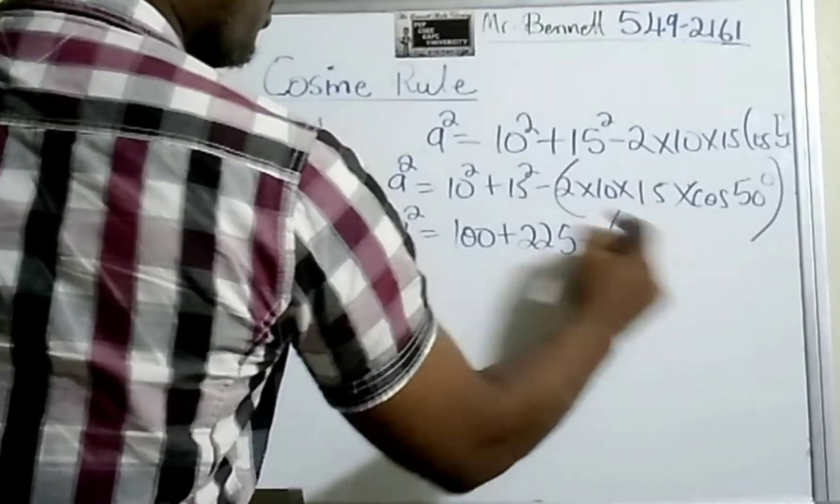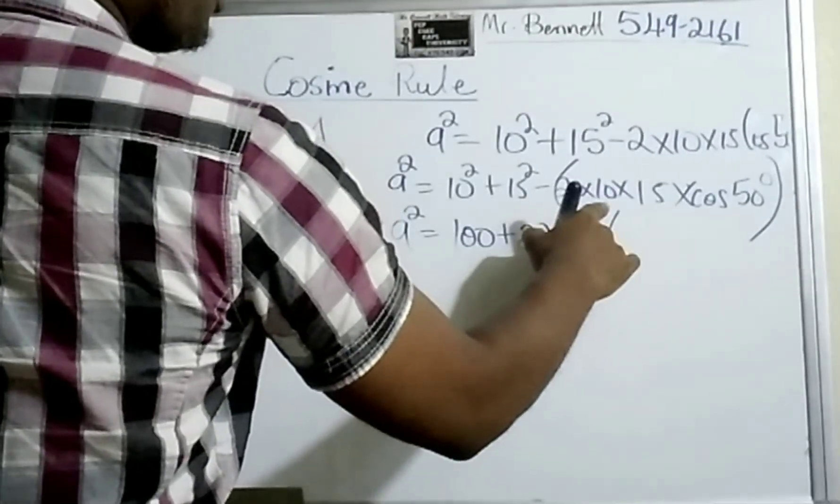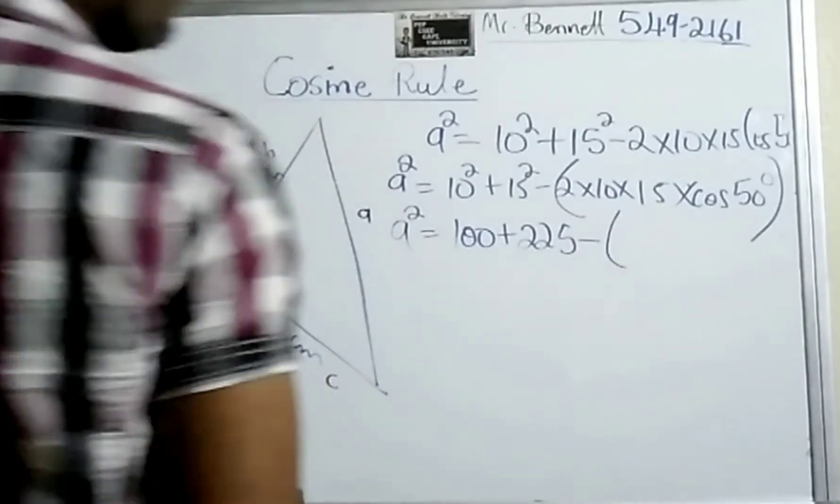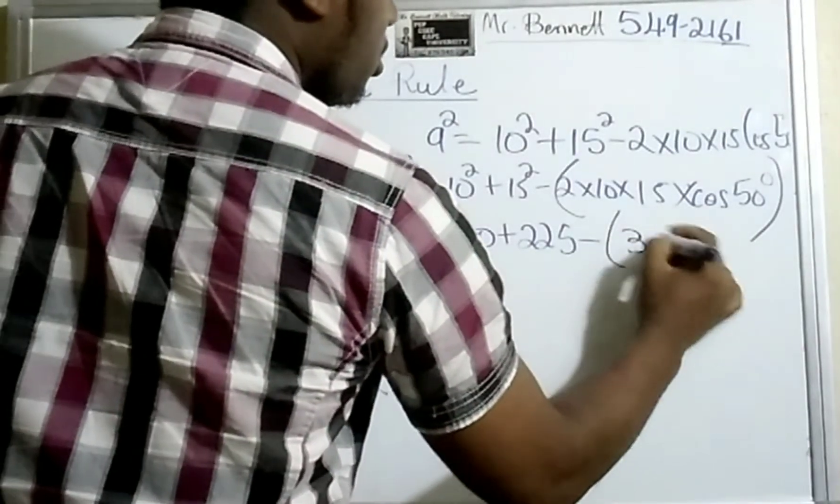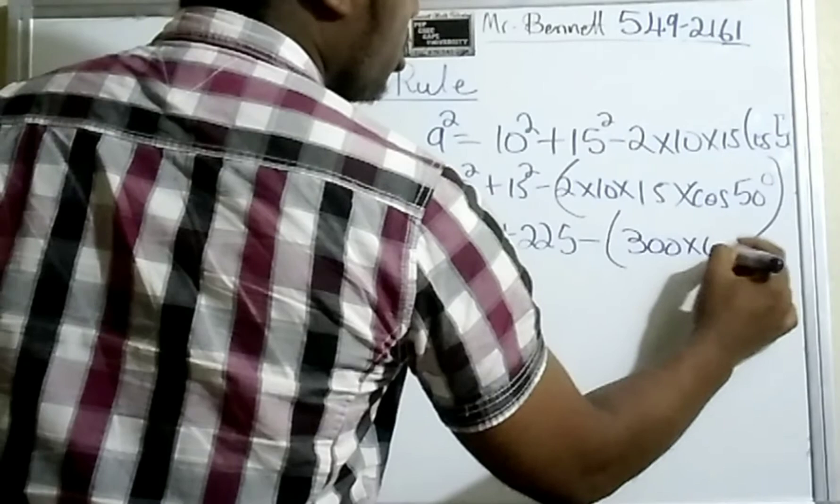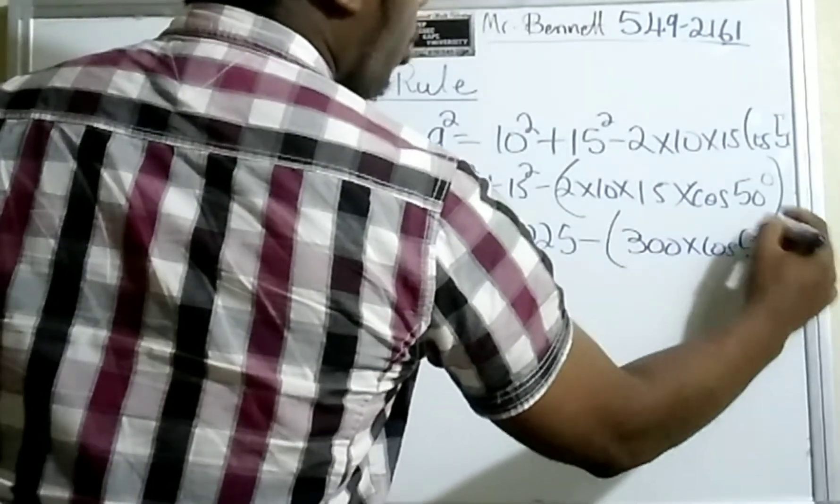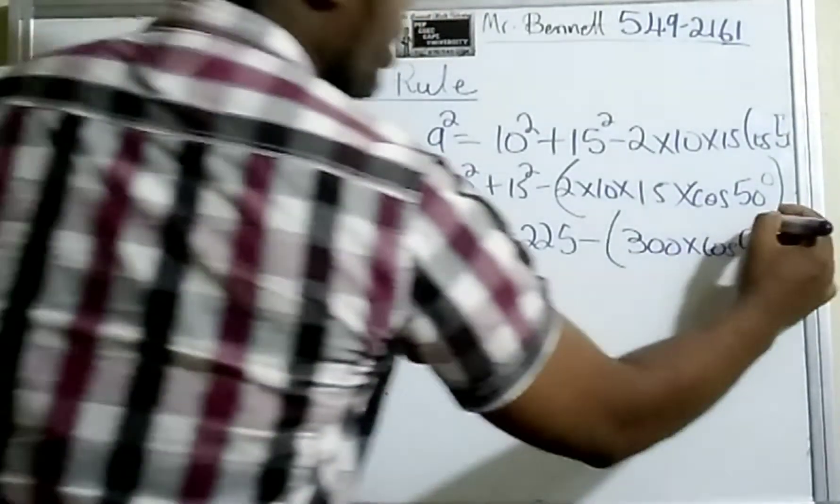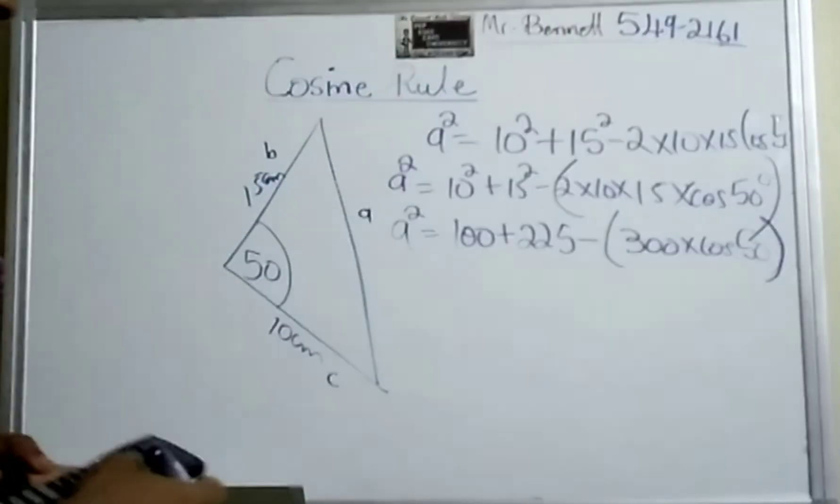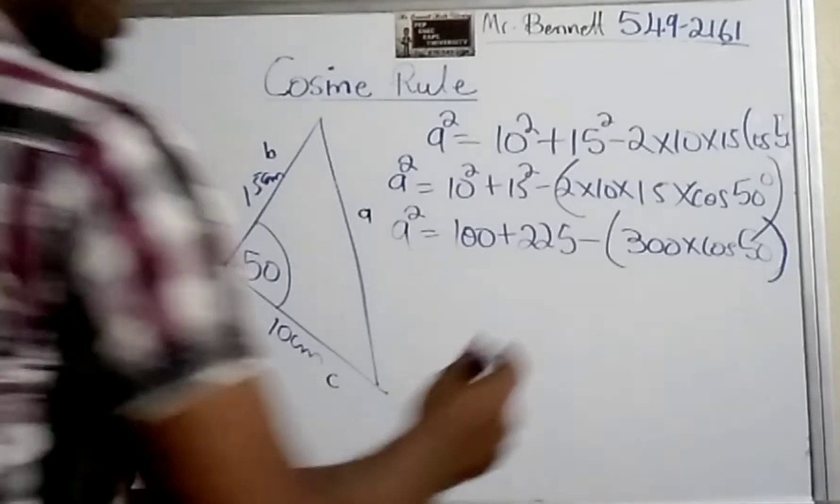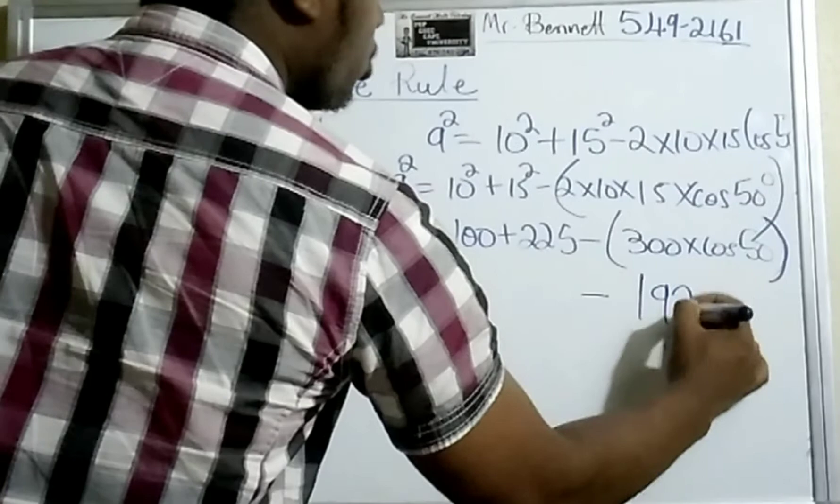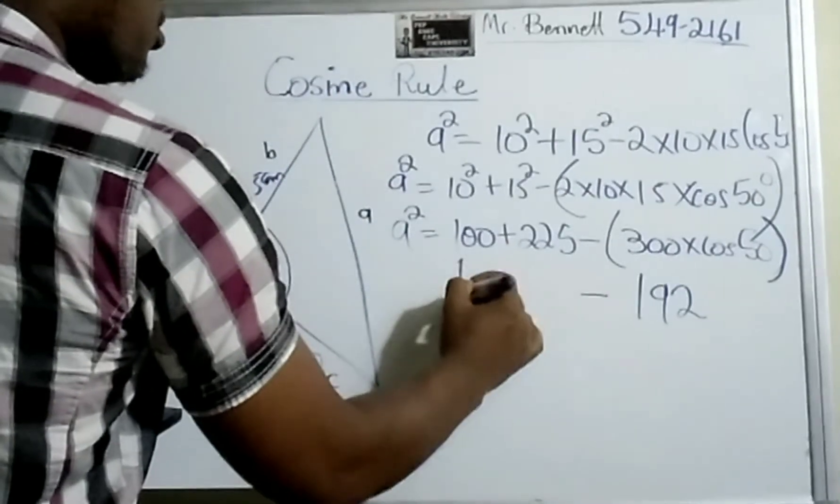Minus 2 × 10 is 20, times 15—let's see, 15 × 20 is 300—times cos 50. I want you guys to work out the bracket first. It will be 300 × cos 50. Use a calculator, and that gives us 192.